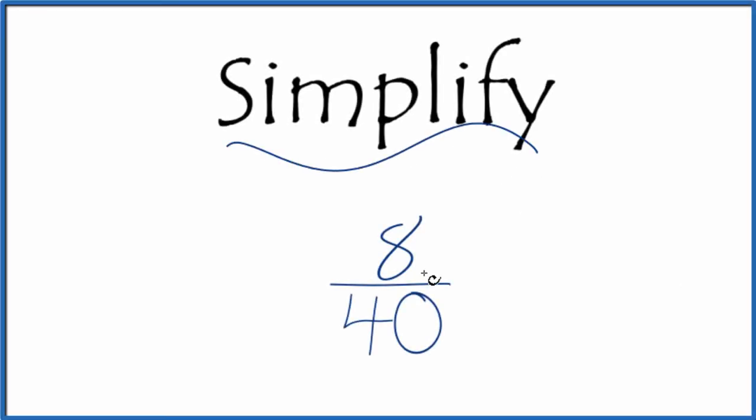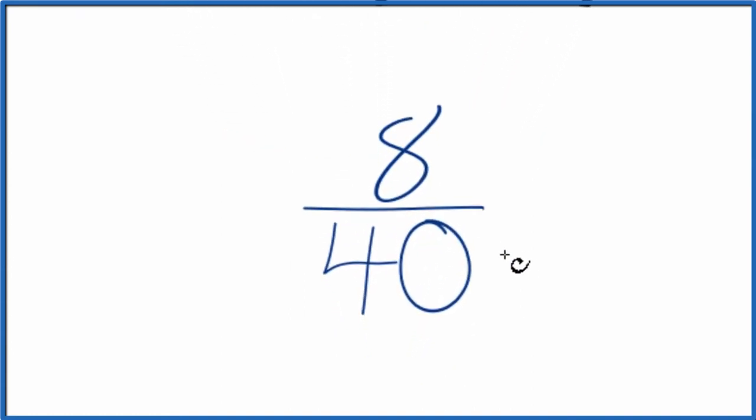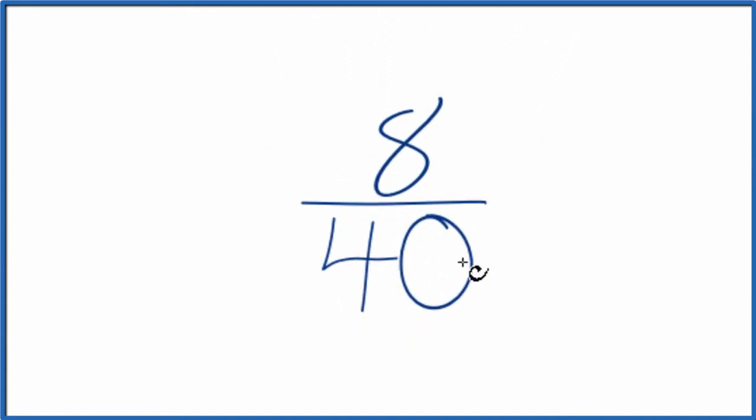If you're asked to simplify the fraction 8 fortieths, here's how you do it. We're looking for another fraction that's equivalent to 8 over 40, an equivalent fraction. That means the values are equal, it's just that we've simplified or reduced 8 over 40 down to its lowest terms.